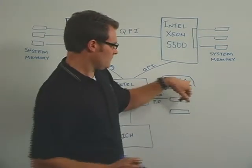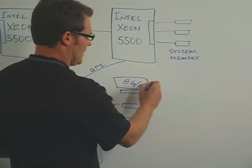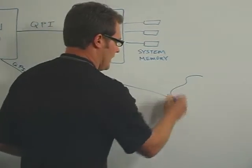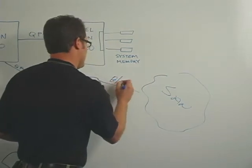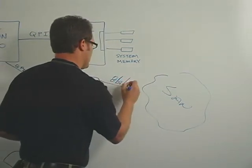So here we've got an Emulex 8GB HBA, and it's connected out here into the SAN, and that's 8GB per second.